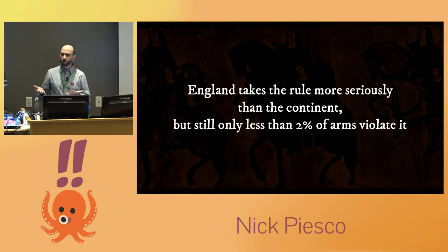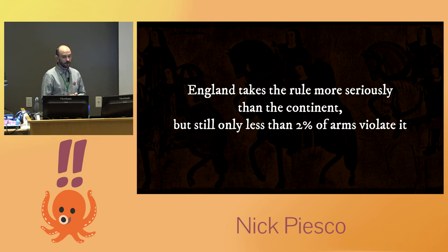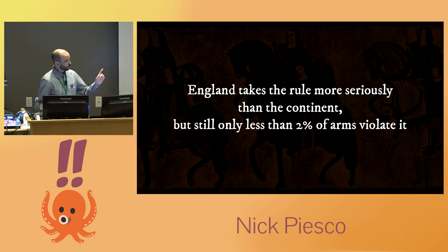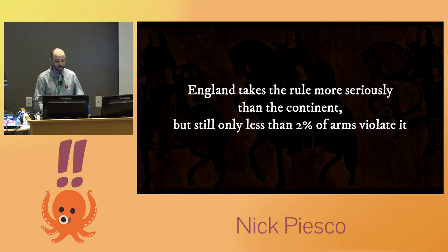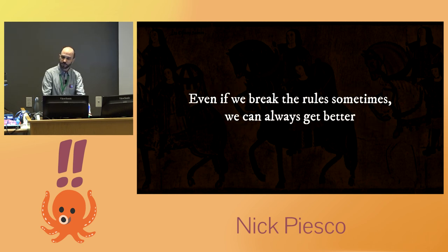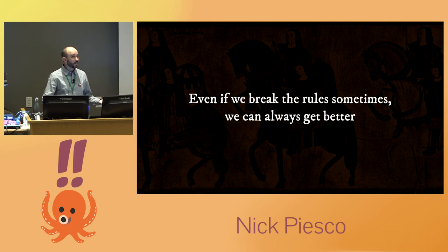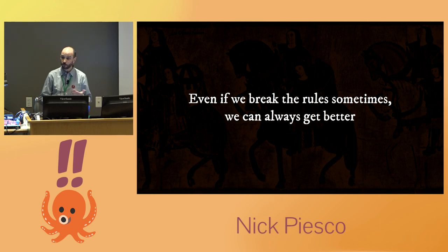England does take the rule of tincture a little bit more seriously than the continent. It's broken sometimes, but not very often — only less than 2% of arms violated. Scholars have studied tens of thousands of arms and found that only 2% violated. For something that really was not codified until we were a couple hundred years into it, it's about as hard and fast a rule as you can put together. Even if we do break the rule sometimes, we can always get better. When it comes to accessibility and inclusive design, incremental improvements are still improvements. We just need to set a high standard for ourselves and keep working toward it so we can make the web a better place for everybody. Thanks.